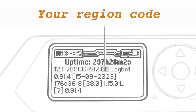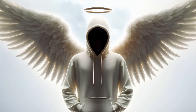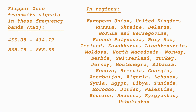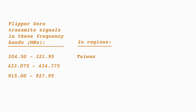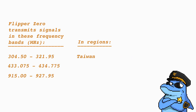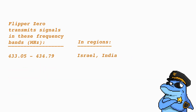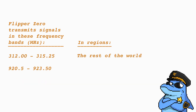To view your region code in ISO format on your desktop, simply press and hold the down button. For comprehensive details on regions and their respective frequencies approved for civilian use, refer to these tables. I've also provided these details in the video description.